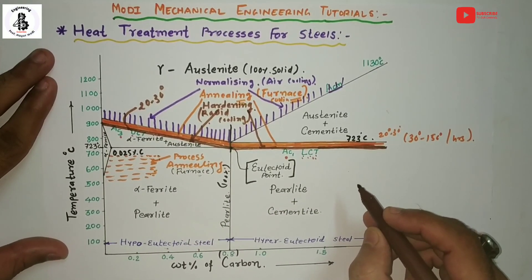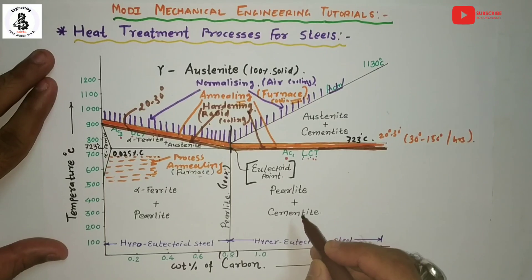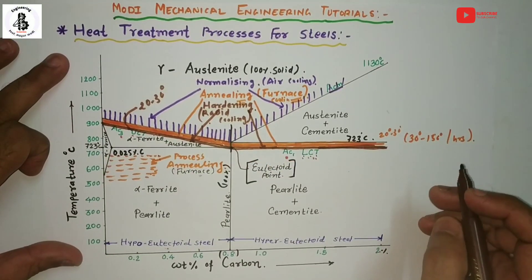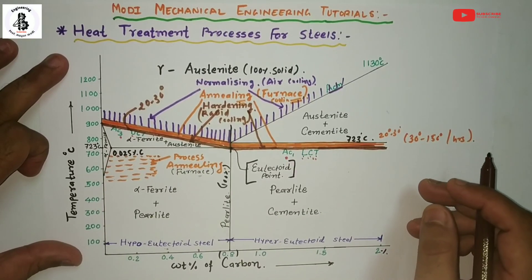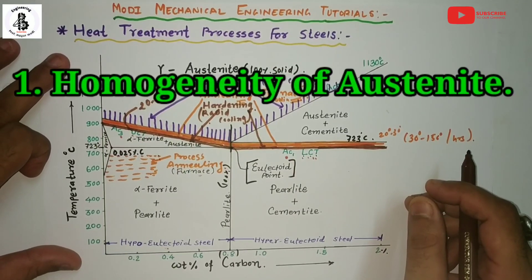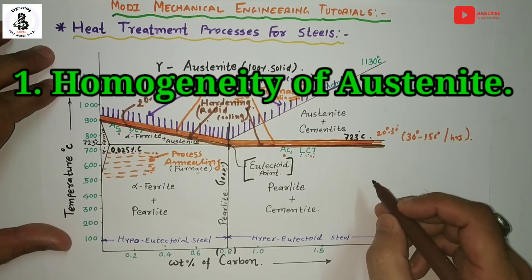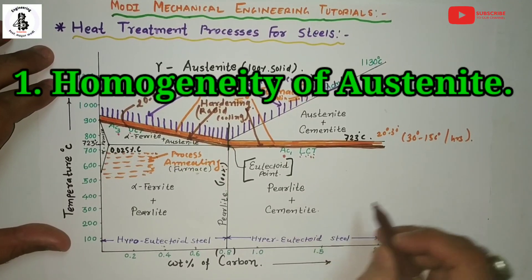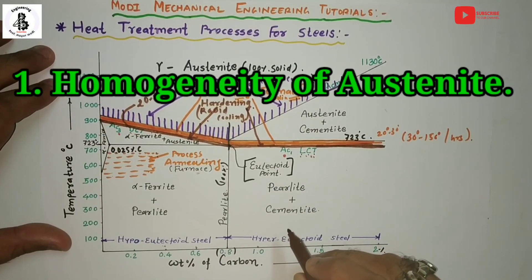In the hardening process, austenite does not transform into pearlitic, ferritic, or cementite structure — it only transforms into martensite. Hence the transformation from austenite to martensite must be observed carefully, depending on some factors. The first is homogeneity of the austenite: correctly calculating the austenitic temperature for any steel depends on the weight percentage of carbon and holding at that temperature to get a homogeneous structure. This gives proper hardness throughout the steel and no soft spots are observed.